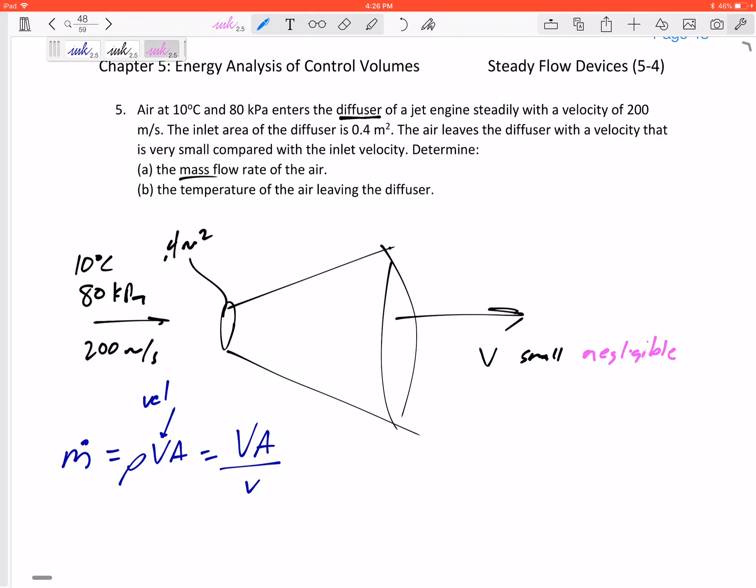Because we know the velocity, 200 meters per second, we know the cross-sectional area. If we could find the specific volume, then we've got enough to get m dot. Do you think we have enough information to find the specific volume? I think so. We have a temperature and a pressure.